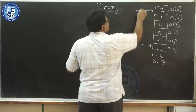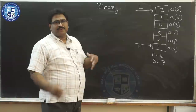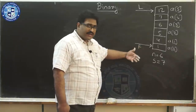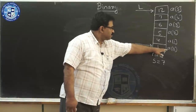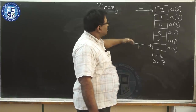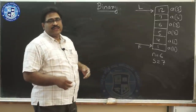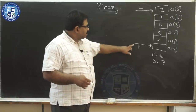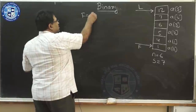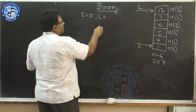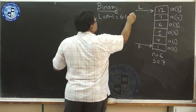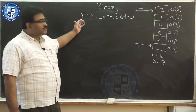The value of f is 0 and the value of l is n minus 1, which is 6 minus 1 equals 5. Using a hostel analogy, one person stands at position f and another at position l. Now we find the midpoint: m equals (f plus l) divided by 2, using integer division. That is (5 plus 0) divided by 2, which gives us m equals 2.